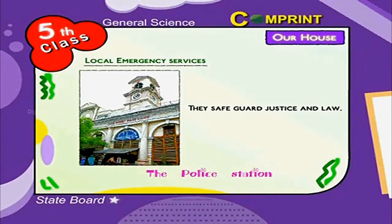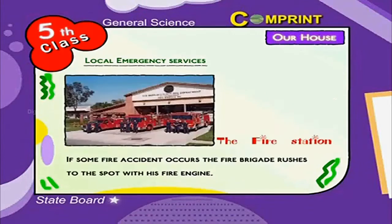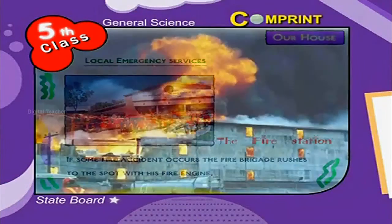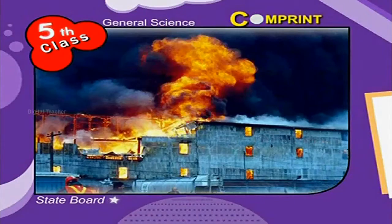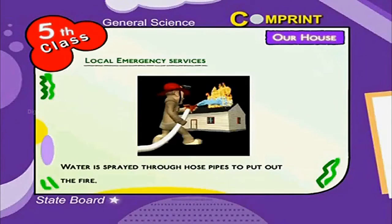Traffic police control traffic, avoid accidents, and help the old and children to cross the road. The fire station: If a fire accident occurs, the fire brigade rushes to the spot with the fire engine. Water is sprayed through hose pipes to put out the fire.